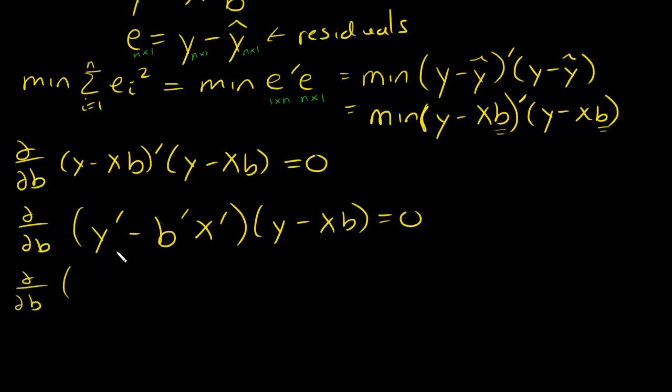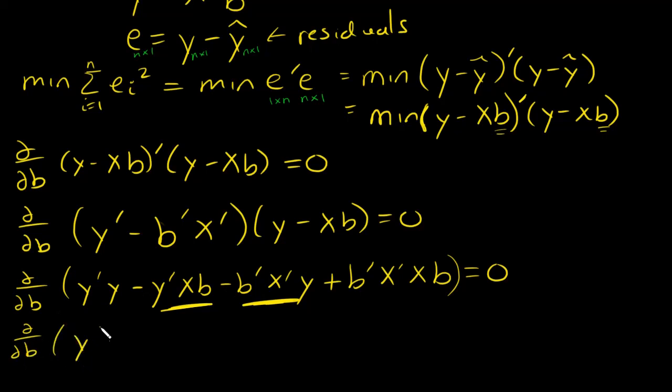I'll foil this out. I haven't taken the derivative yet, so I'll have y transpose y, then this guy times the back guy is minus y transpose XB, then this guy times this guy will be minus B transpose X transpose y, and then the back guys multiplied by each other, they're both negative so that makes a positive B transpose X transpose XB. Notice that this term and this term are exactly the same, so they can be combined. This is y transpose y minus 2 times B transpose X transpose y plus B transpose X transpose X times B.